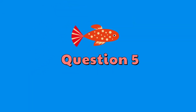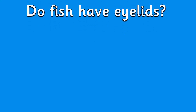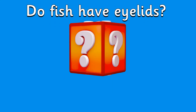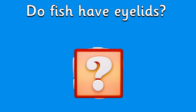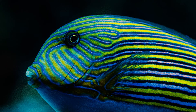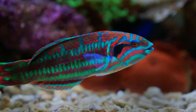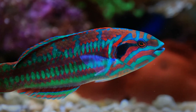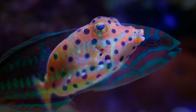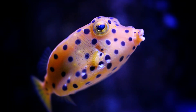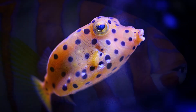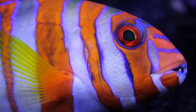Question five. Do fish have eyelids? Most fish do not have eyelids, and that's because they really don't need them. Eyelids help moisten eyes so that they don't dry out. Since fish live in water, dry eyes are not really an issue.